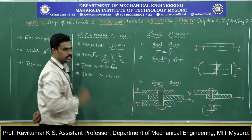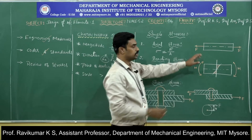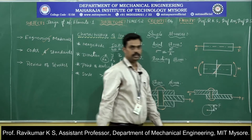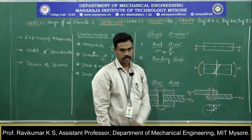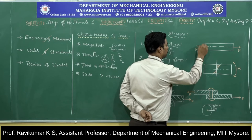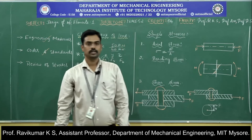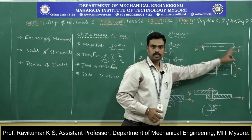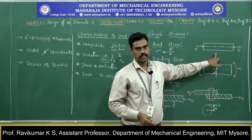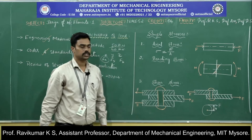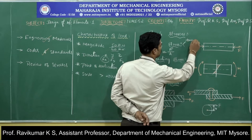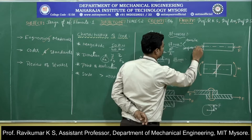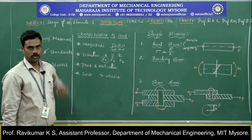Coming to the sense: if the arrow marks indicate the load is pulling the member from both sides, that type of stress is called tensile stress. If the arrow marks indicate the forces are pushing or compressing the member from both sides, the stress developed is called compressive stress. Under axial stress, we have two types — tensile and compressive — depending on the sense of the load.